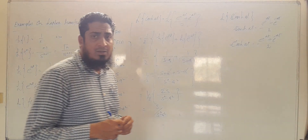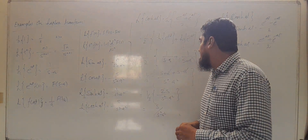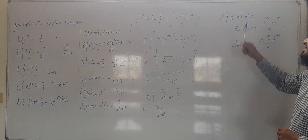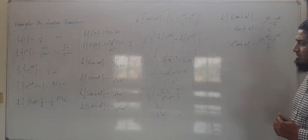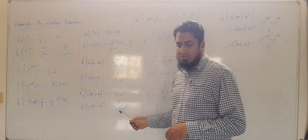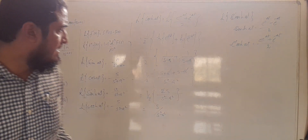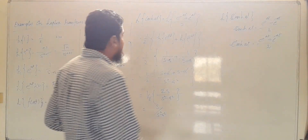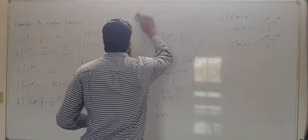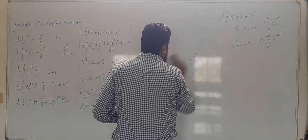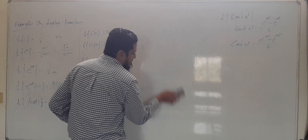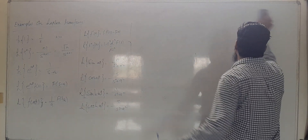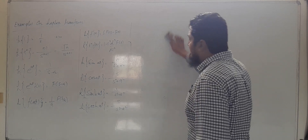We have solved two examples here in which we have calculated the Laplace Transform of sinh(at) as a upon s squared minus a squared, and cosh(at) as s upon s squared minus a squared. Now we will see one more example.